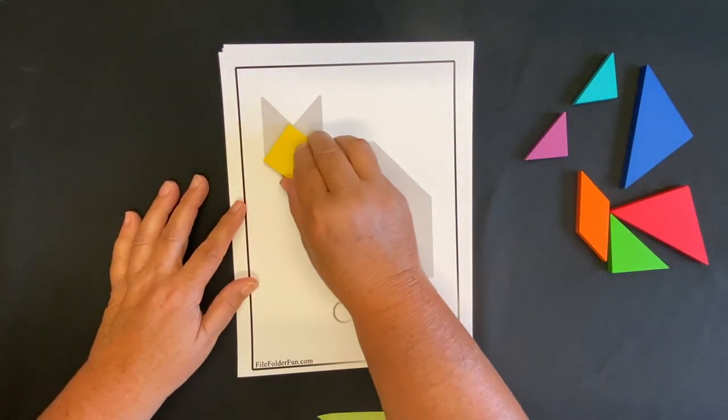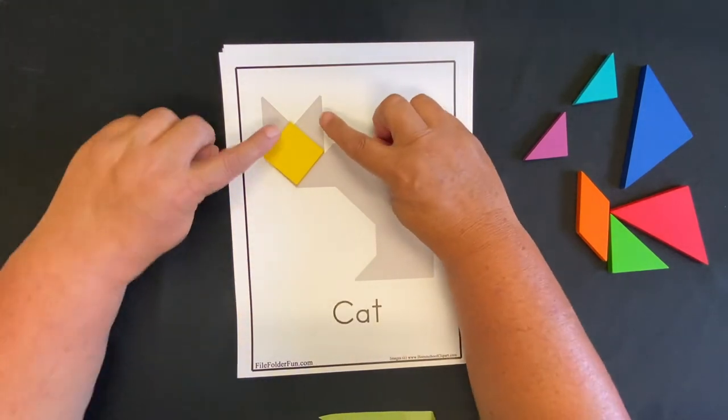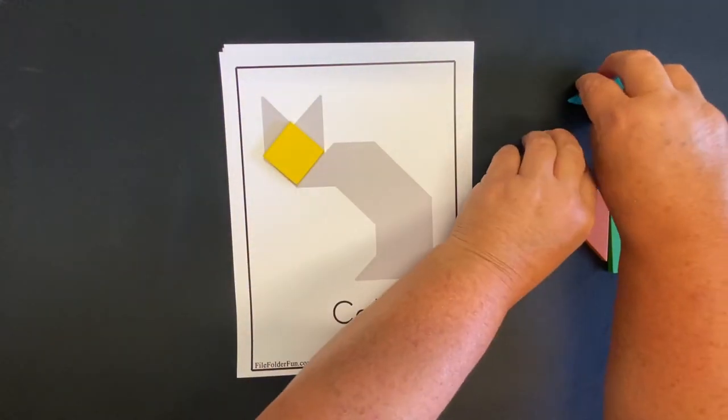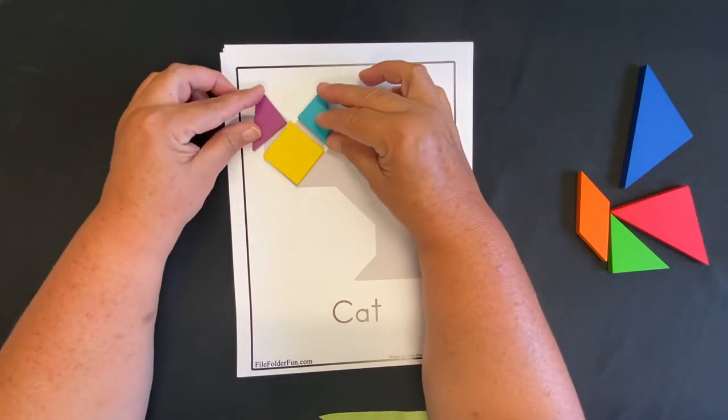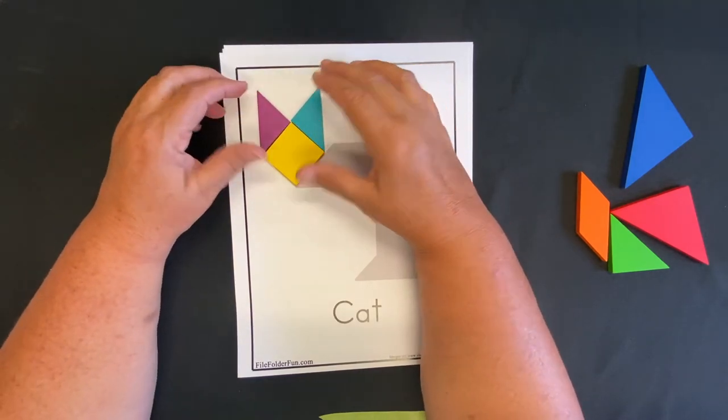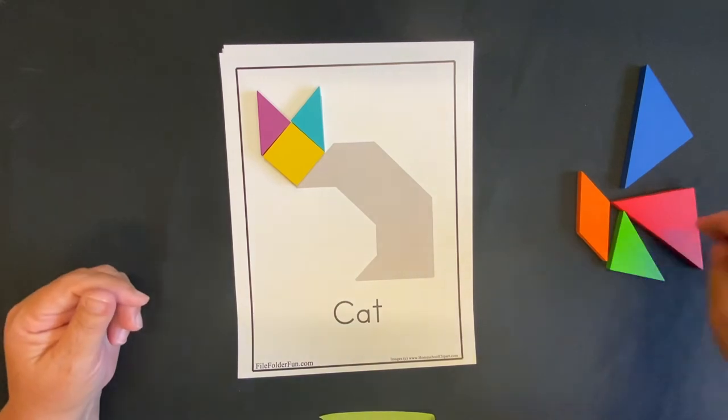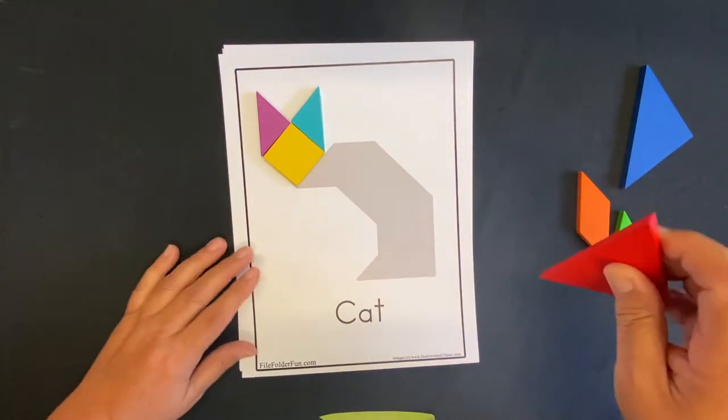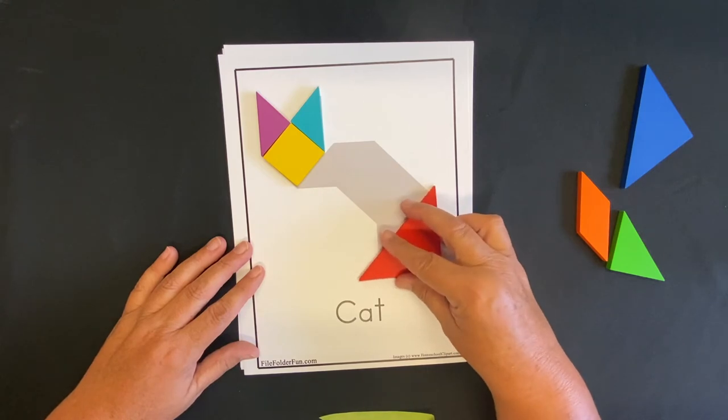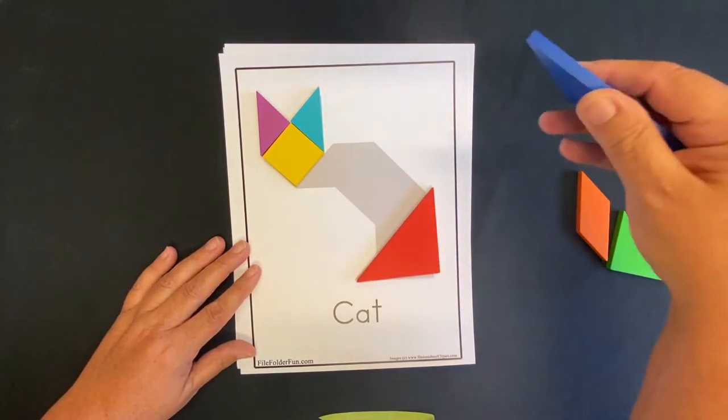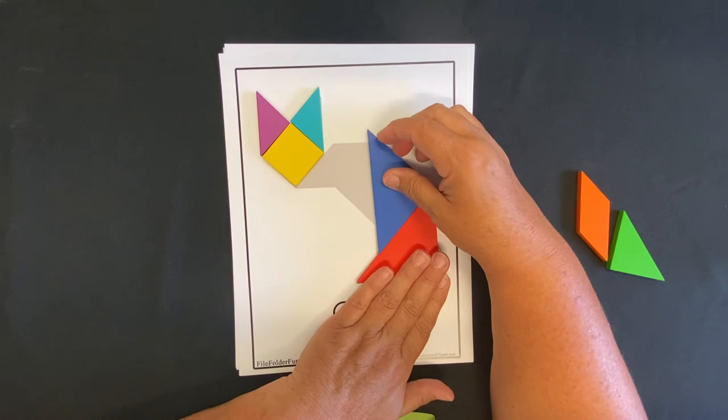I think we'll put our square here, and then you clearly see what these two shapes are. They are our small triangles. We're going to put those there. And then we're going to use our big triangle at the bottom and another big triangle.